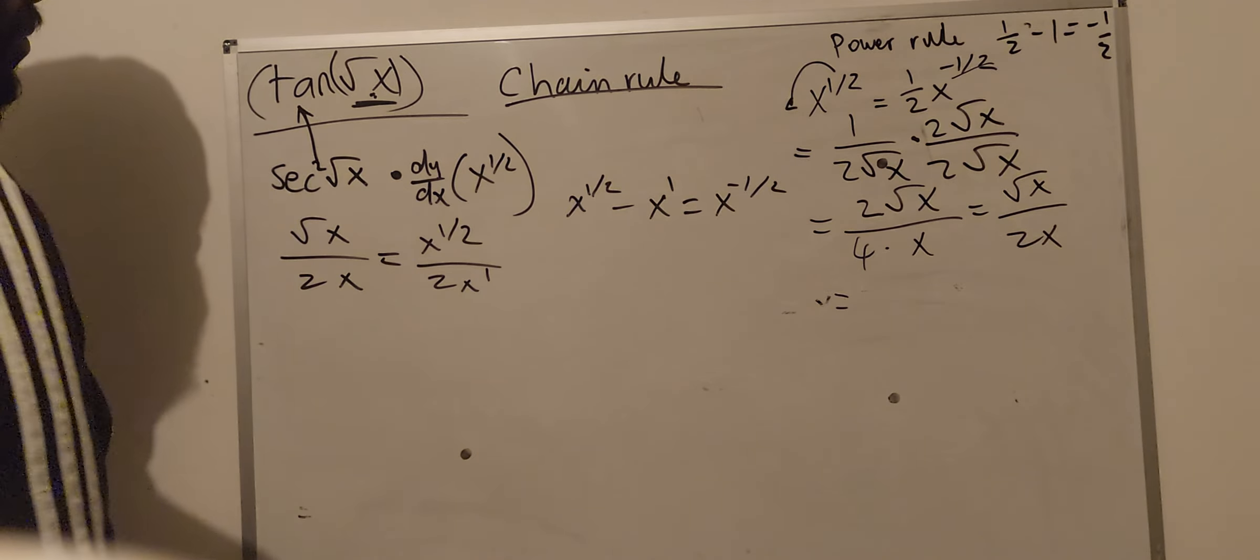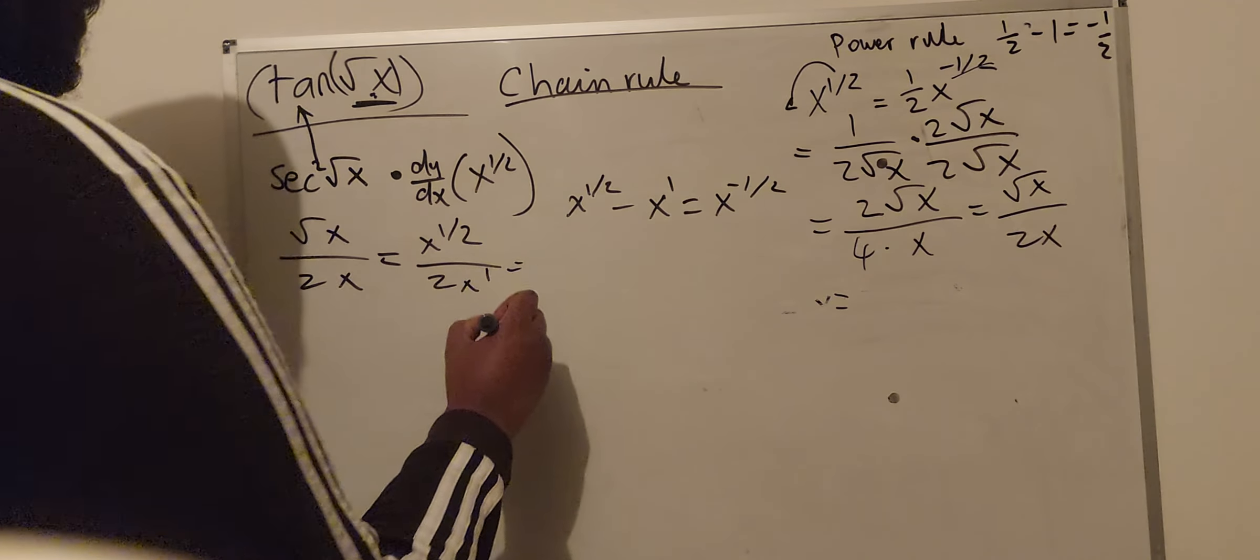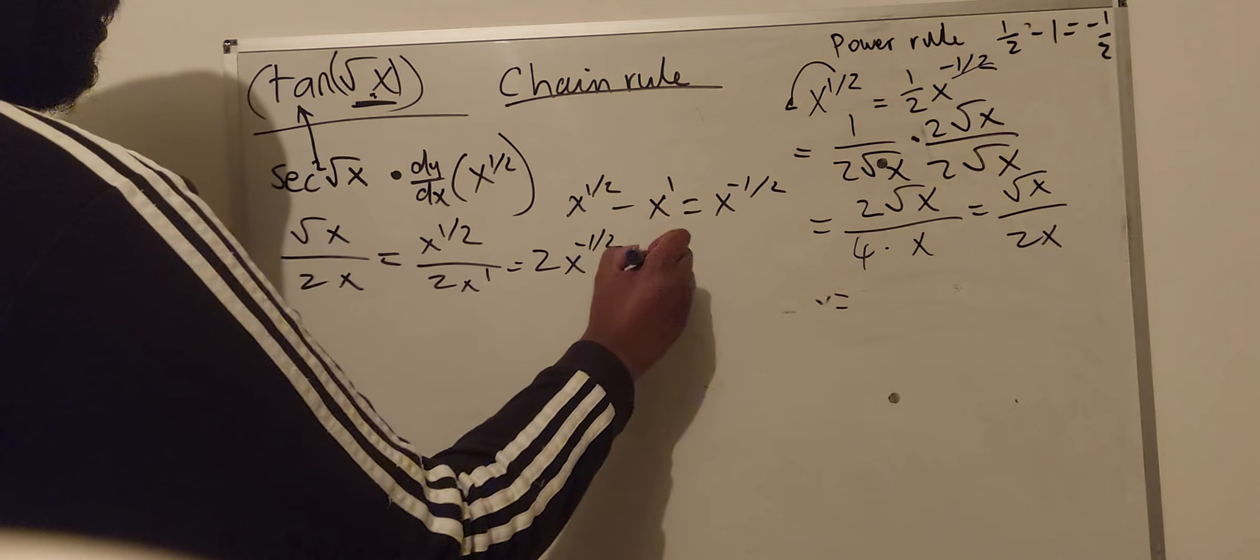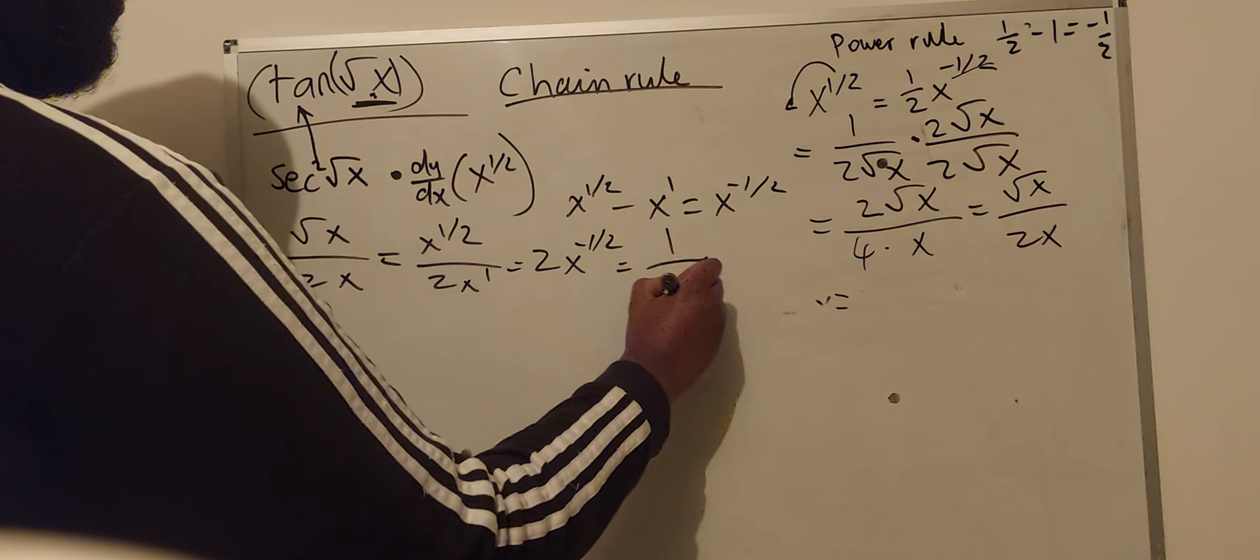So what does that equal? Where does this leave us? It leaves us in the exact same position where we came from. It's going to be 2x to the power of minus a half, which is also equal to 1 divided by 2 squared root x.